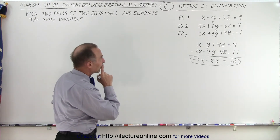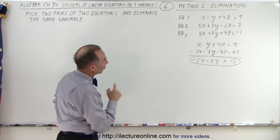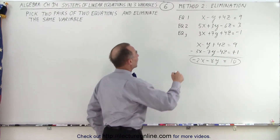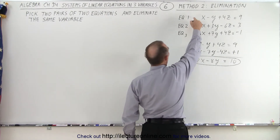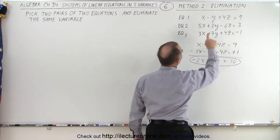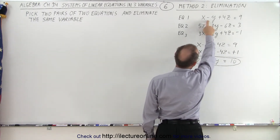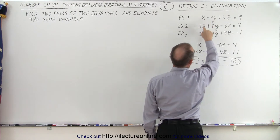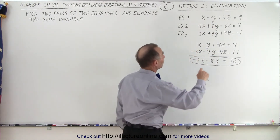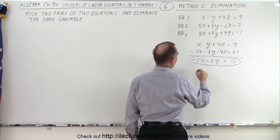So now we need to take another set of two equations. How about equation one and two? What I need to do here is multiply equation number one by three and equation number two by two. The reason is I want again to eliminate z.